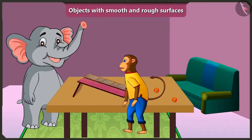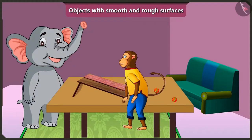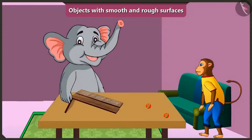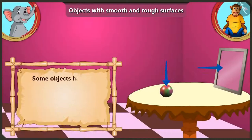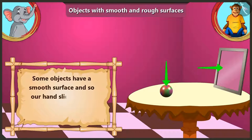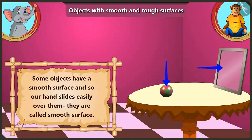We also call them smooth surfaced. Now look at this slope — its surface is very smooth. My hand is sliding on this. Yes Appu, the surface of few things are smooth, so our hand easily slides on them. This is called a smooth surface.